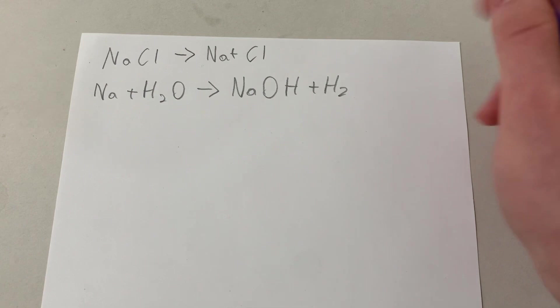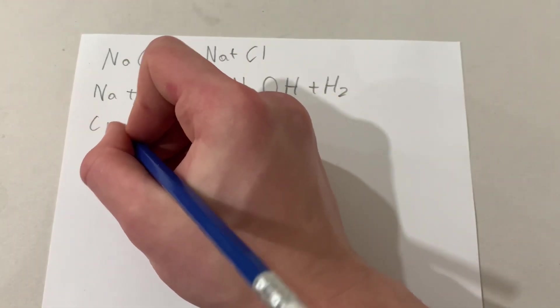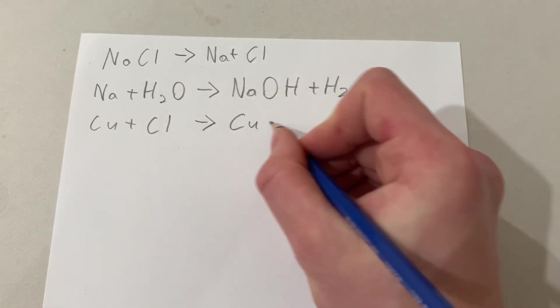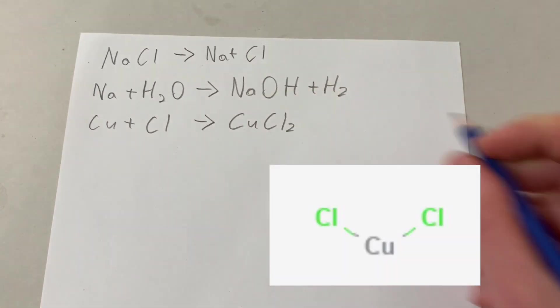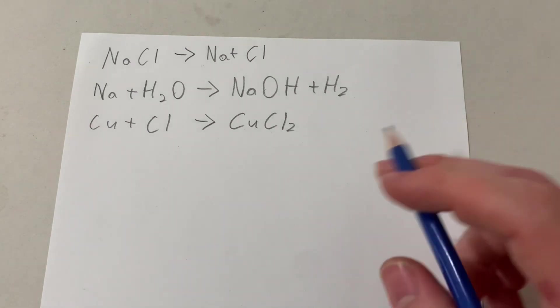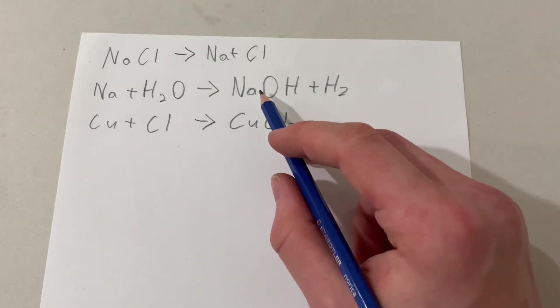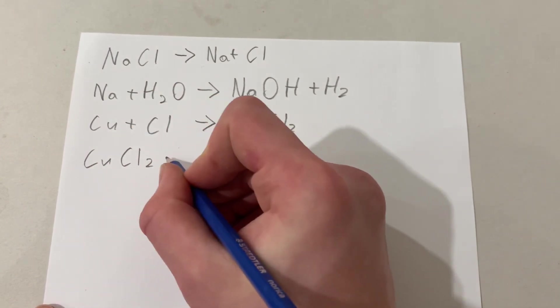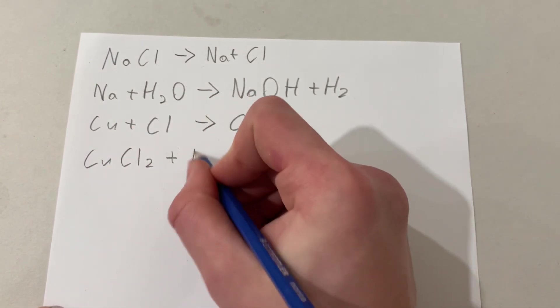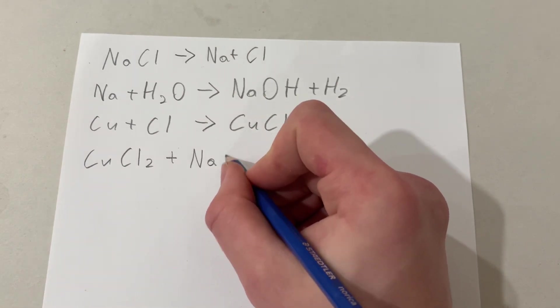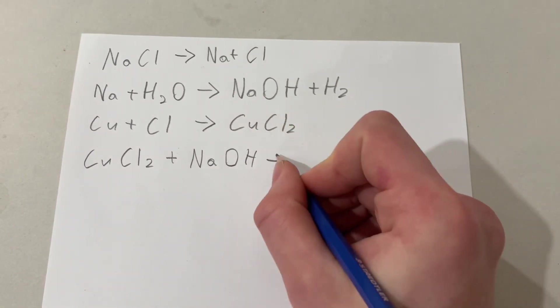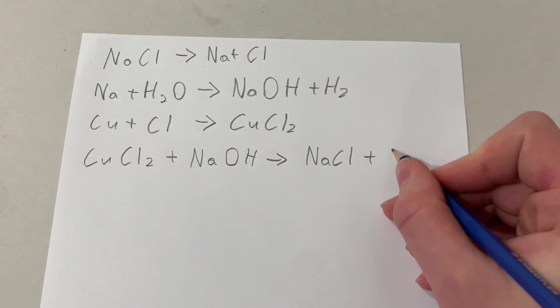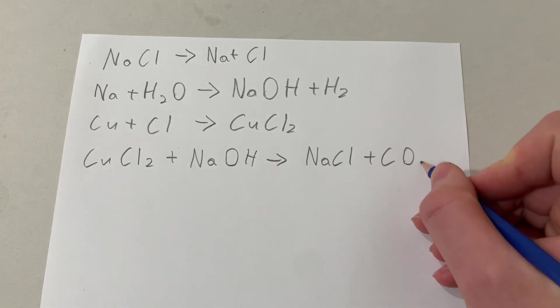Chloride is also a highly reactive ion, so it reacts with copper to make copper chloride (CuCl2). Copper chloride is rather unreactive, and sodium hydroxide is reactive. So what happens from that point on, they react together in a double displacement reaction to form the starting table salt and copper hydroxide.